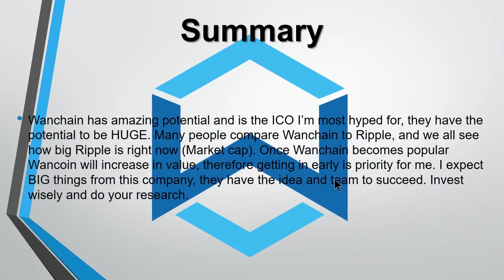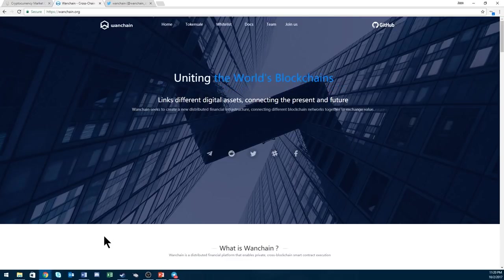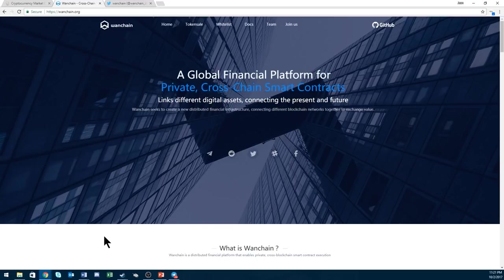To summarize Wanchain: to me, this has huge and amazing potential and it's the most hyped ICO for me. I'm excited about the potential, and people I know personally are super excited as well. Many people compare Wanchain to Ripple and we all see how big Ripple is right now in terms of market cap. Once Wanchain becomes popular, WAN Coin increases in value — therefore getting in early is a priority for me. They have the idea and they definitely have the team to succeed. Invest wisely and do your research. I know this coin was a little confusing — it took me quite a while to research this — but I wanted to get this information out since there's not very much information on Wanchain. If you enjoyed this video or found it useful, please click that like button, subscribe, and I'll see you next time.